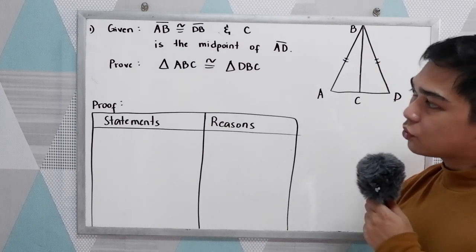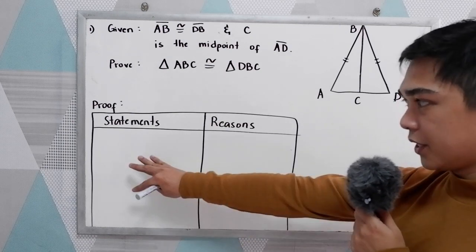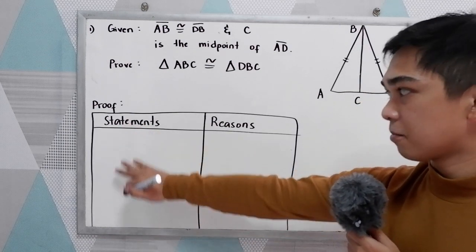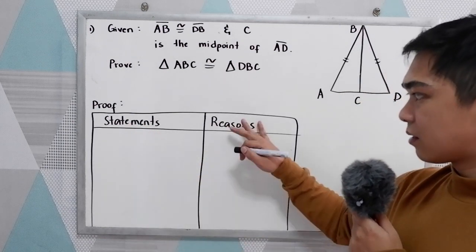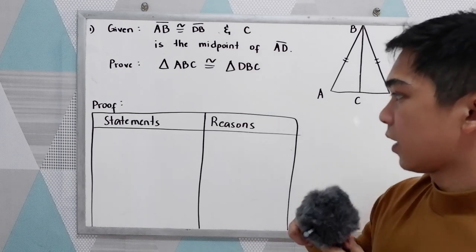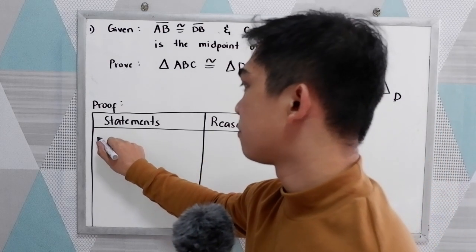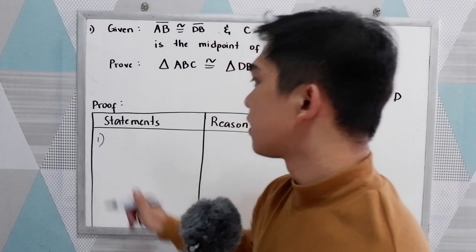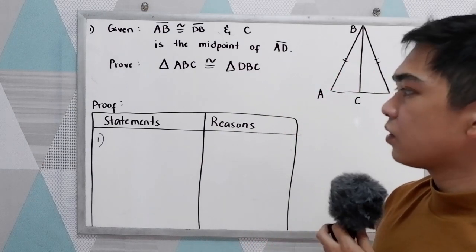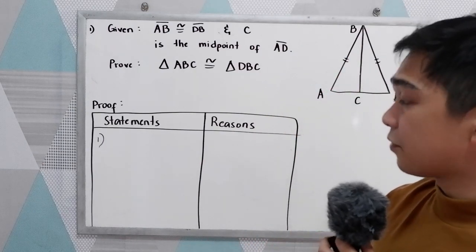In writing a two-column proof, we have here our first column for the statements and the second column for the reasons. In our statements and reasons, we need to write first all the given.